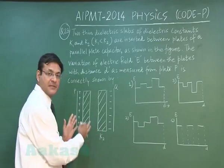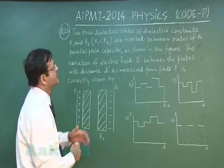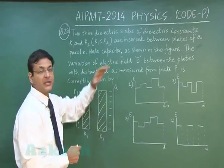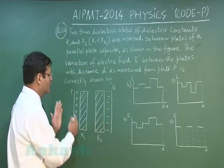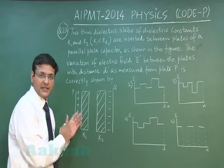Two dielectric slabs, the diagram has been given k1 and k2, have been introduced between two capacitor plates, are inserted between plates of a parallel plate capacitor as shown in the figure. You have two plates p and q, positively charged, negatively charged. As you will be moving from this end to this end, electric field will be decreasing.